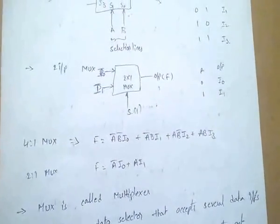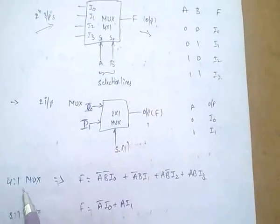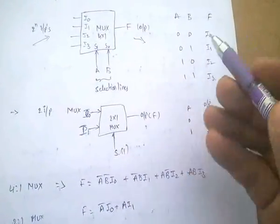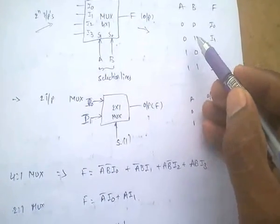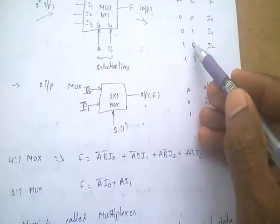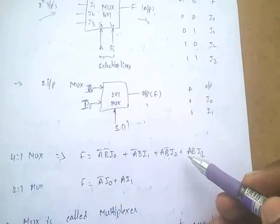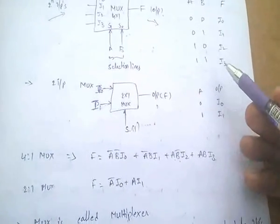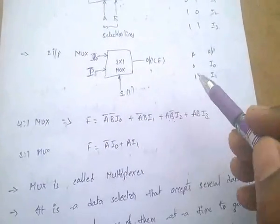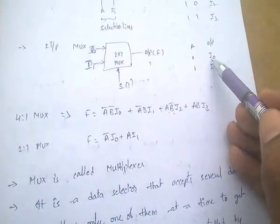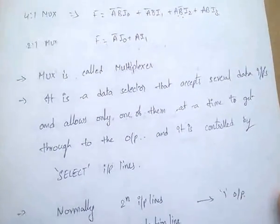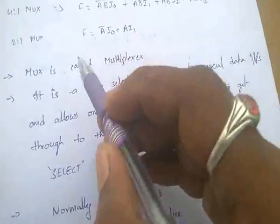We can also write Boolean expressions for multiplexers. For a 4-to-1 MUX: F = (Ā·B̄)·i0 + (Ā·B)·i1 + (A·B̄)·i2 + (A·B)·i3. For a 2-to-1 MUX: F = Ā·i0 + A·i1.